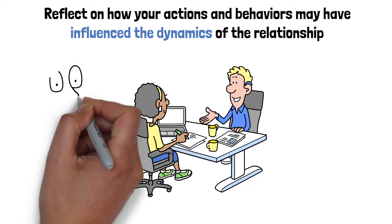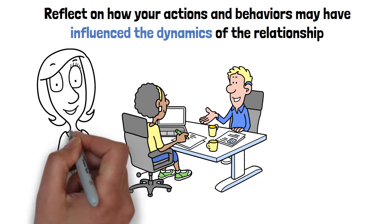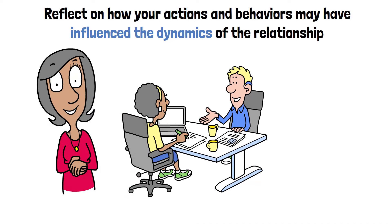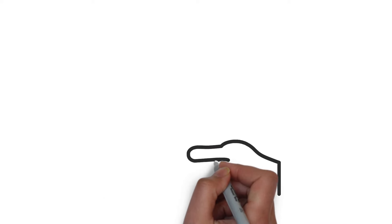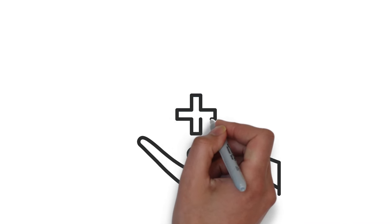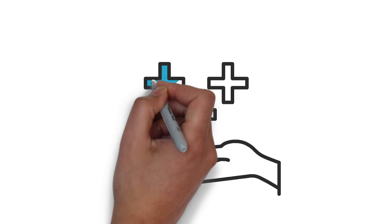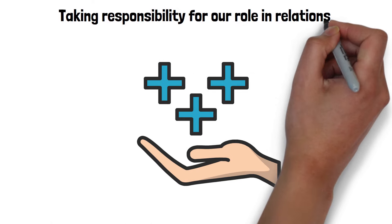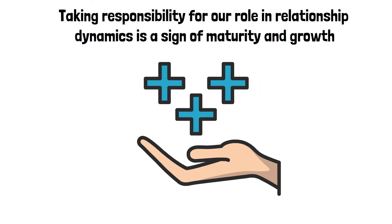Be honest with yourself about areas where you may have contributed to challenges or conflicts within the relationship. Recognize that self-awareness is the first step towards positive change. Use this insight as an opportunity for growth and self-improvement. Identify areas where you can work on communication, boundaries, and emotional intelligence to foster healthy relationships in the future. Taking responsibility for our role in relationship dynamics is a sign of maturity and growth.